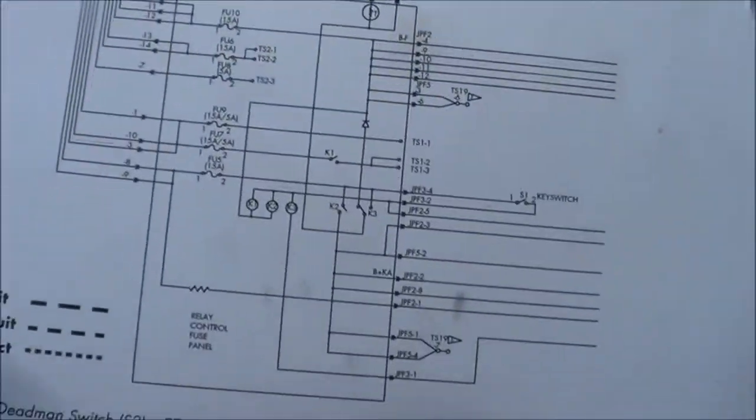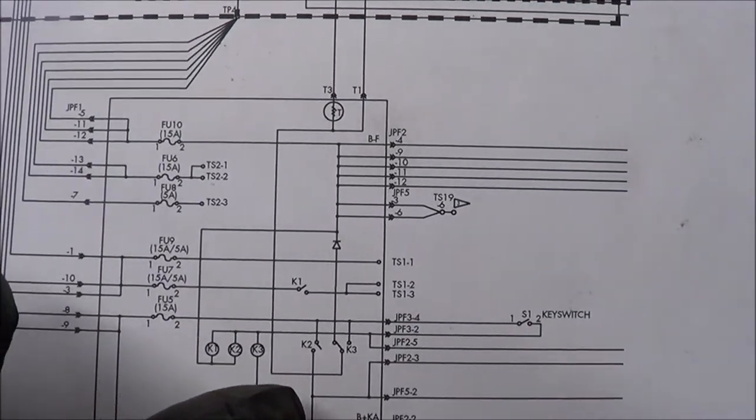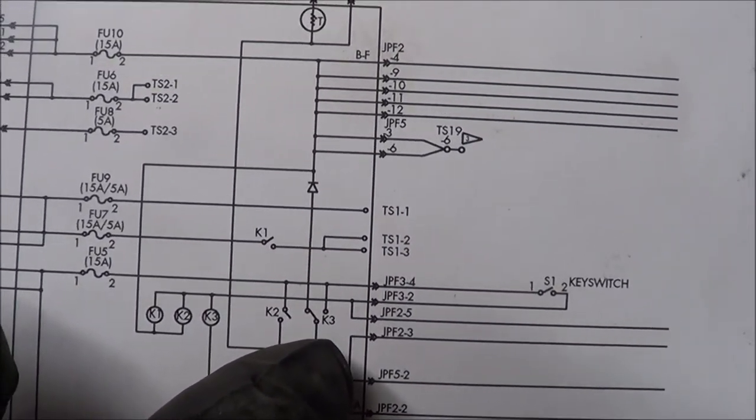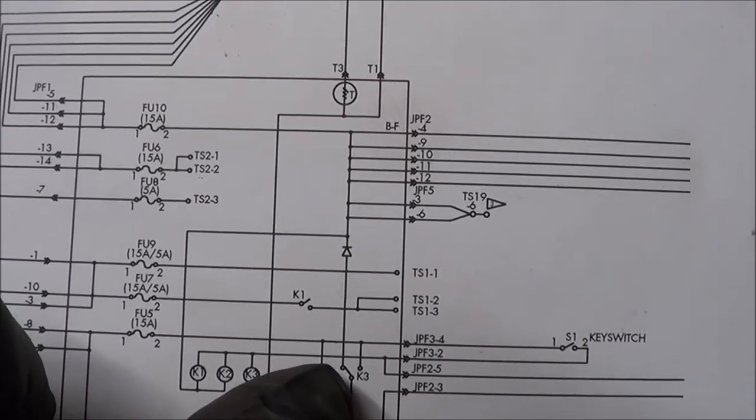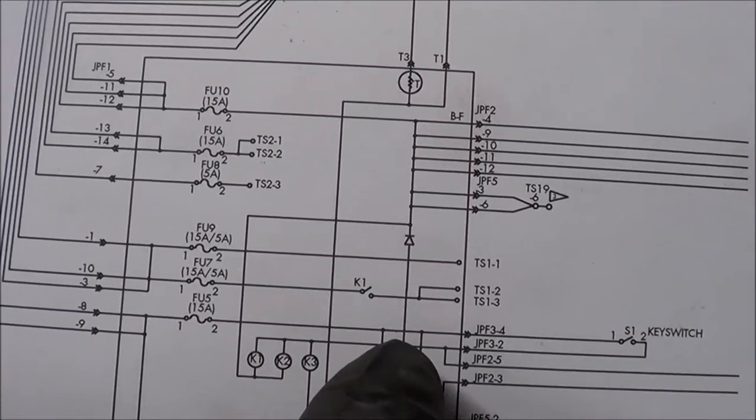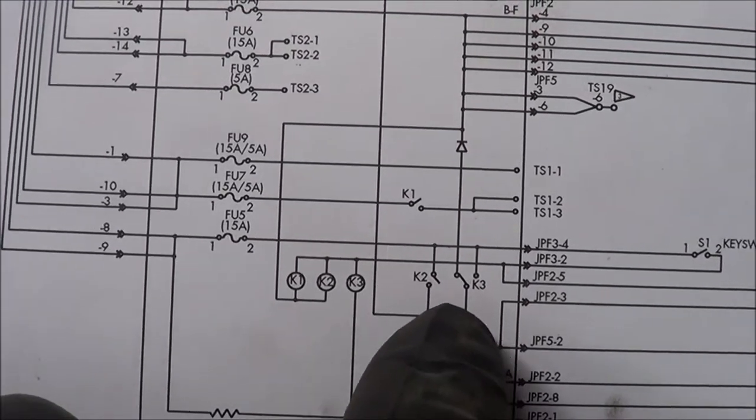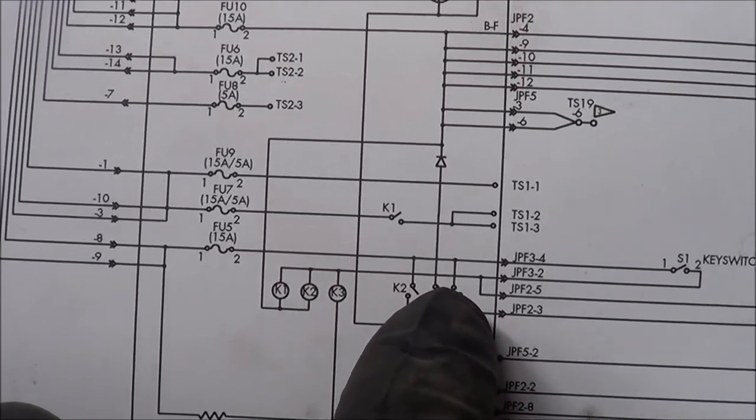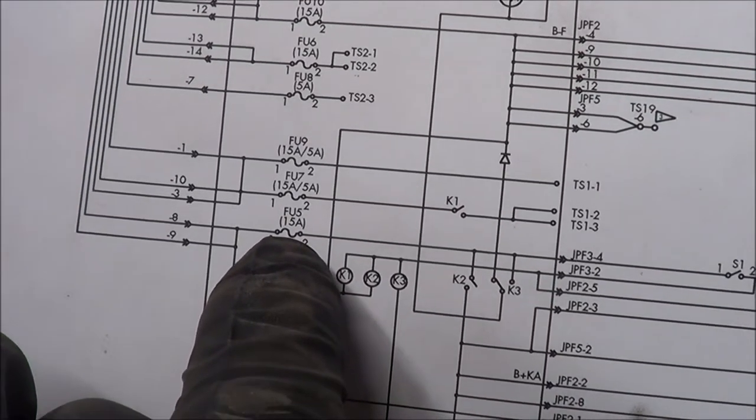So if you look at the diagram, T1 is connected to K3 right here. K3, that's blocked off, it's gonna provide power there. So once you key on, the coil for K3 is gonna have power, it's gonna switch over, then you should have full battery voltage coming from fuse F5.